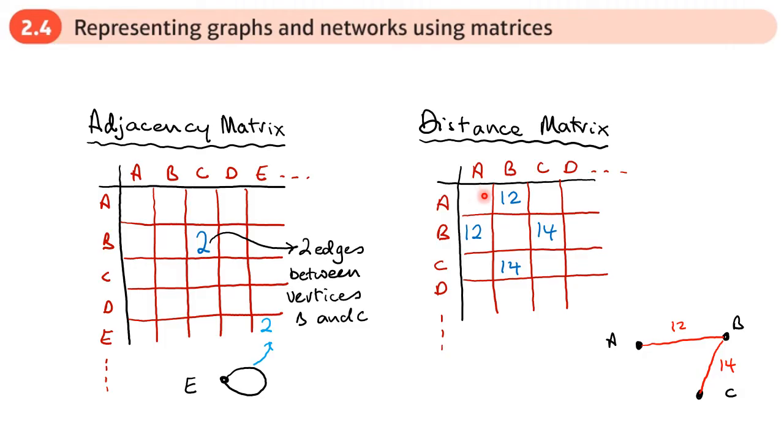Now there's no distance between a vertex and itself, so we put like a dash. So there's always going to be dashes here along this leading diagonal in the same way that, unless there's a loop, we get zeros here. And anywhere in the grid or on your network here where you find there isn't a distance between two vertices, we'll put a dash in the cell.